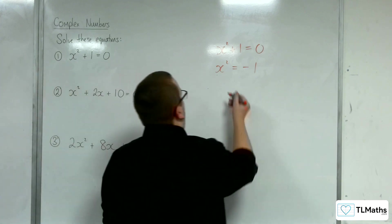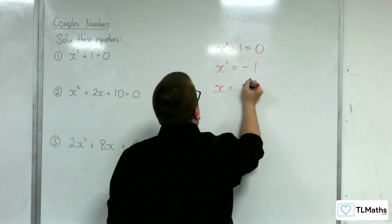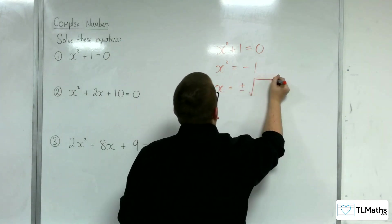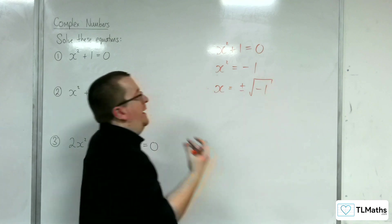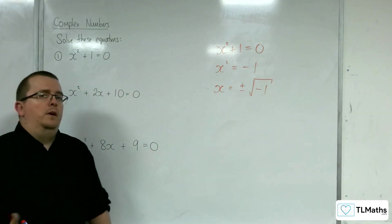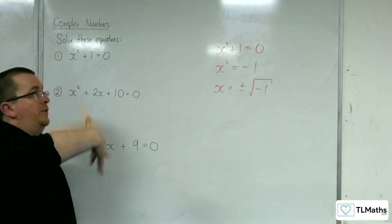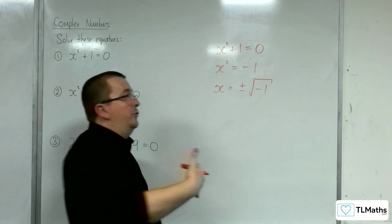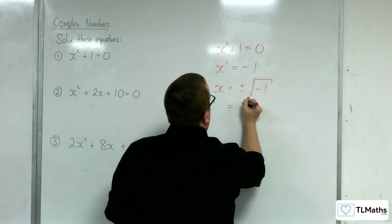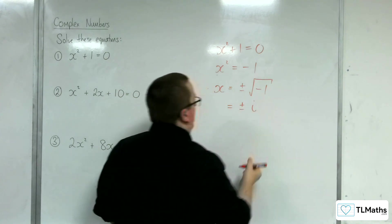And then I would square root both sides. So, we get plus or minus the square root of negative 1. And as we learnt in the previous video, Euler adopted the letter i to represent the square root of minus 1. And so, we have plus or minus i.